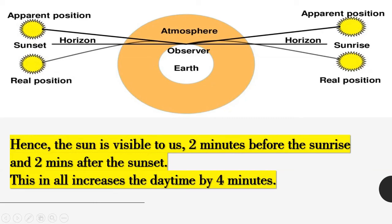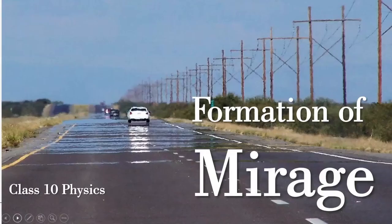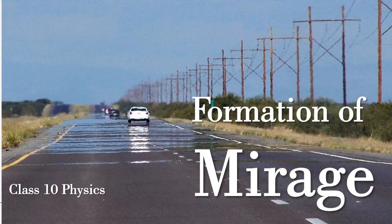This increases the total daytime by four minutes. This was the phenomenon of advanced sunrise and delayed sunset. Next class we are dealing with another very interesting topic — the formation of mirages, again due to atmospheric refraction. Stay tuned, bye-bye, have a nice day.